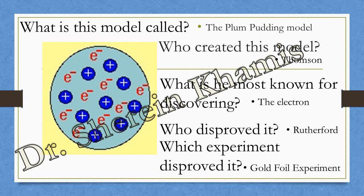There are many questions that depend on your studying. What is the model called and who created it? What is it known as, or what does it depend on - the discovery of what? Who disproved this model, and which experiment provides the explanation for our model? I think we have different kinds of questions, so please concentrate on them.